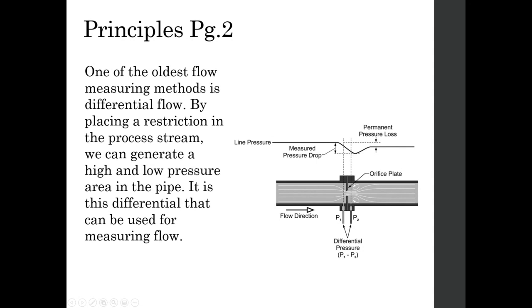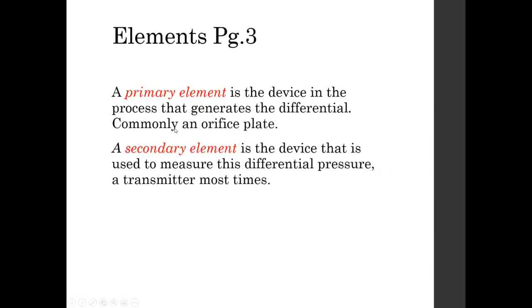We're focusing mostly on elements in this ILM. A primary element by definition is the device in the process that generates the differential — commonly an orifice plate — but we're not speaking about orifice plates in specific terms in this ILM, although there is a section at the back from the previous version that I decided to keep in because orifice plates are so common. The secondary element is the device used to measure this differential pressure, and most times it's a differential pressure transmitter.